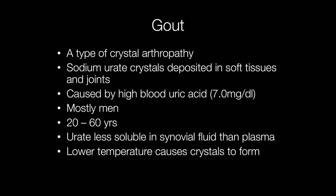The reason why gout affects the joints is because sodium urate is less soluble in synovial fluid than in plasma, particularly if the temperature is lower — for example, in the extremities. This causes the synovial fluid to become supersaturated with sodium urate, resulting in crystals forming.